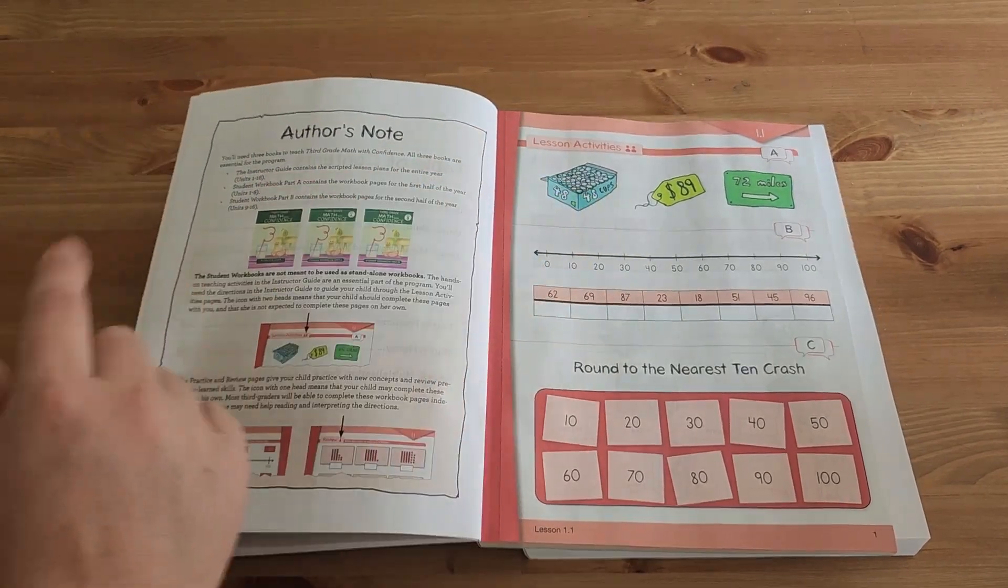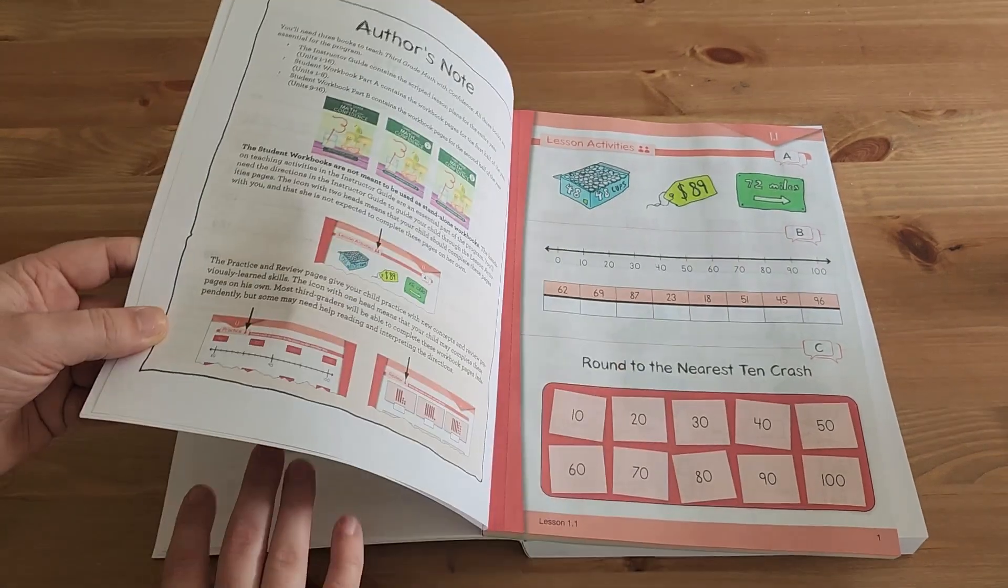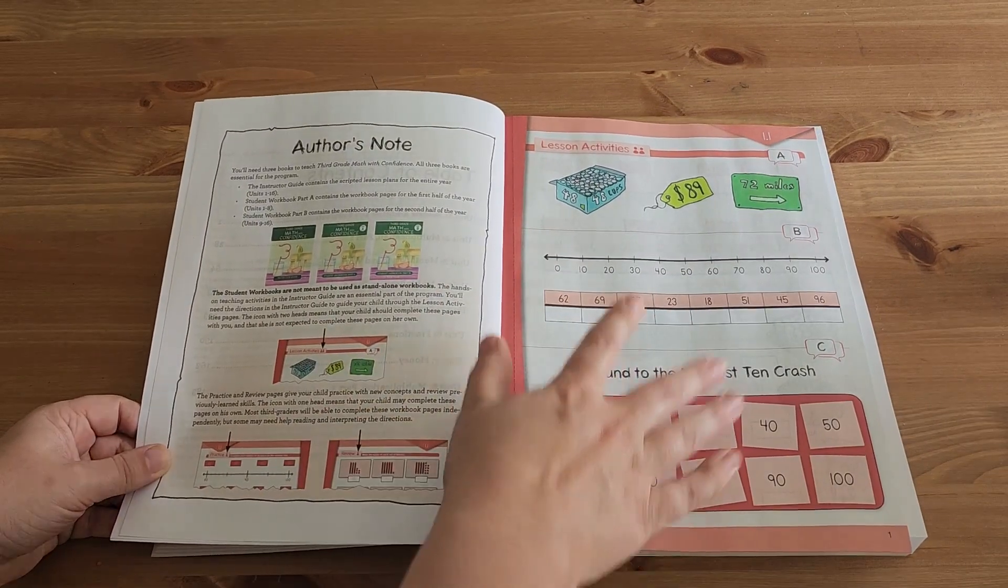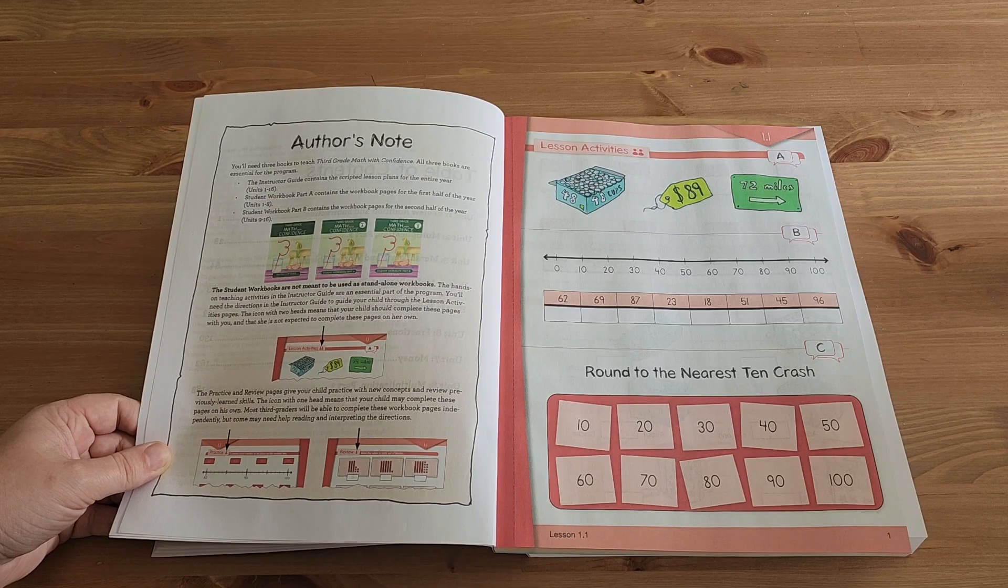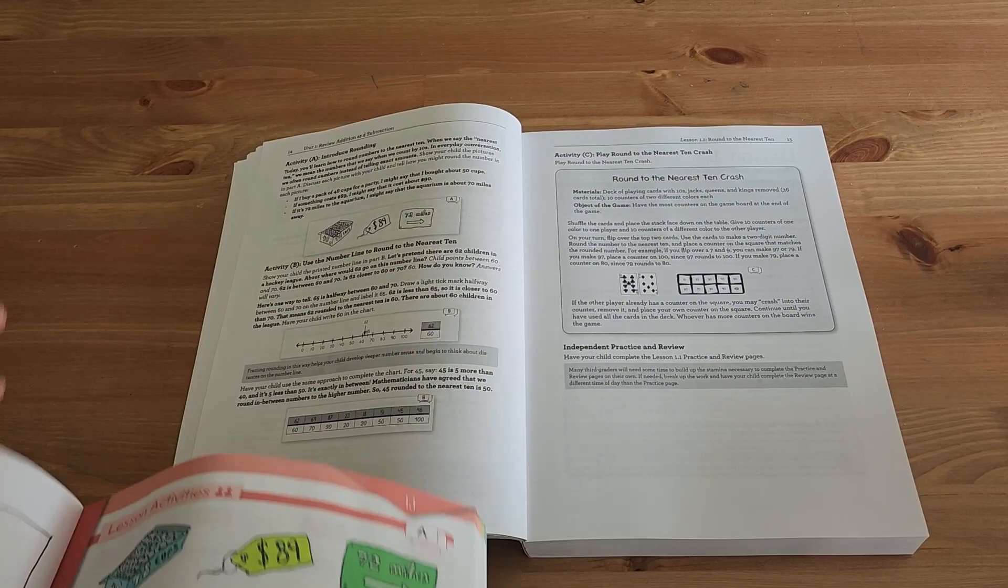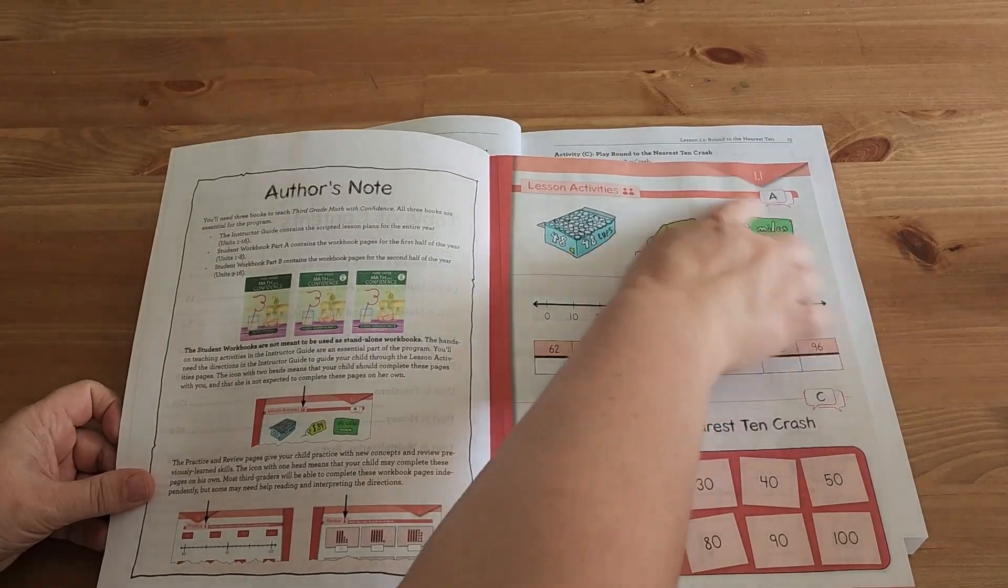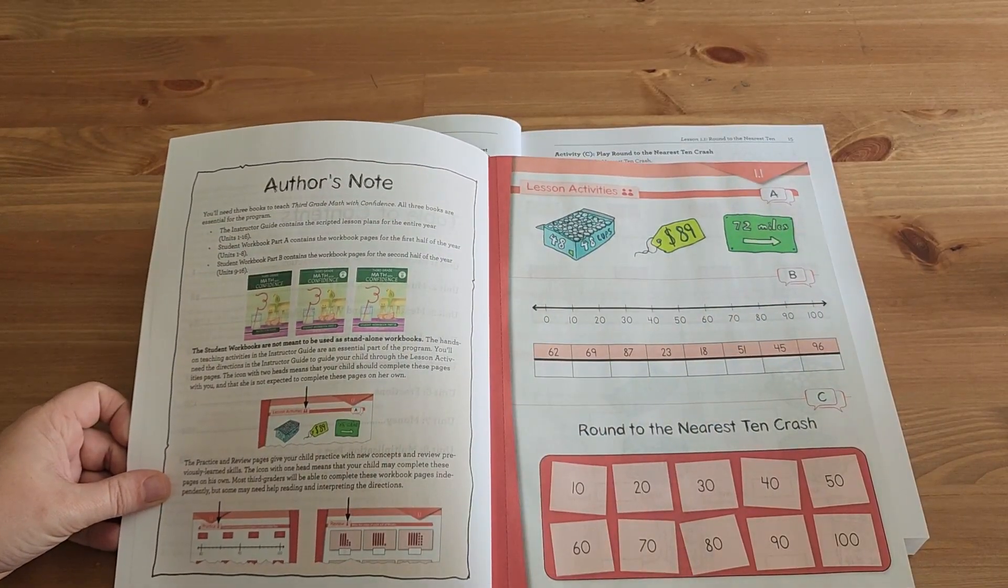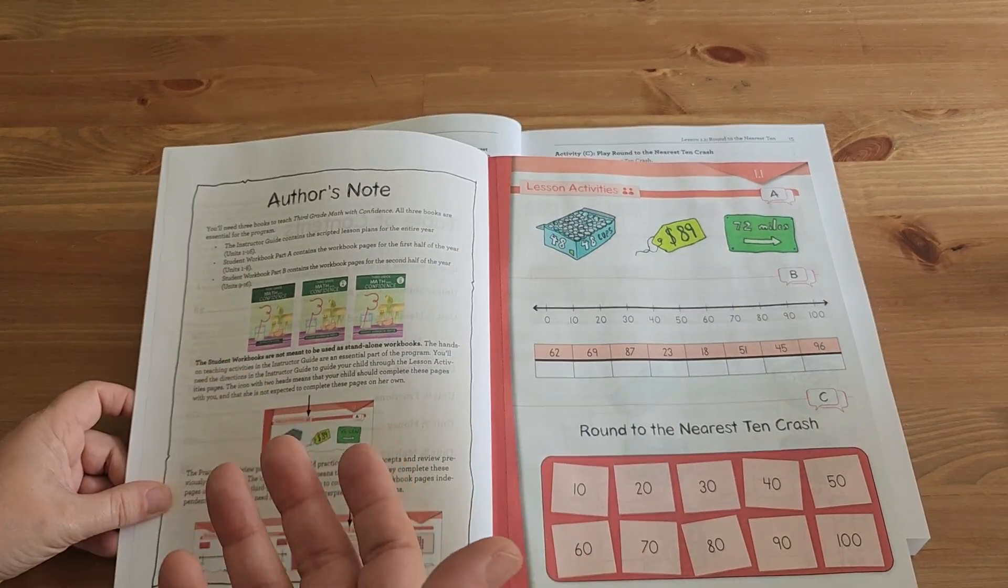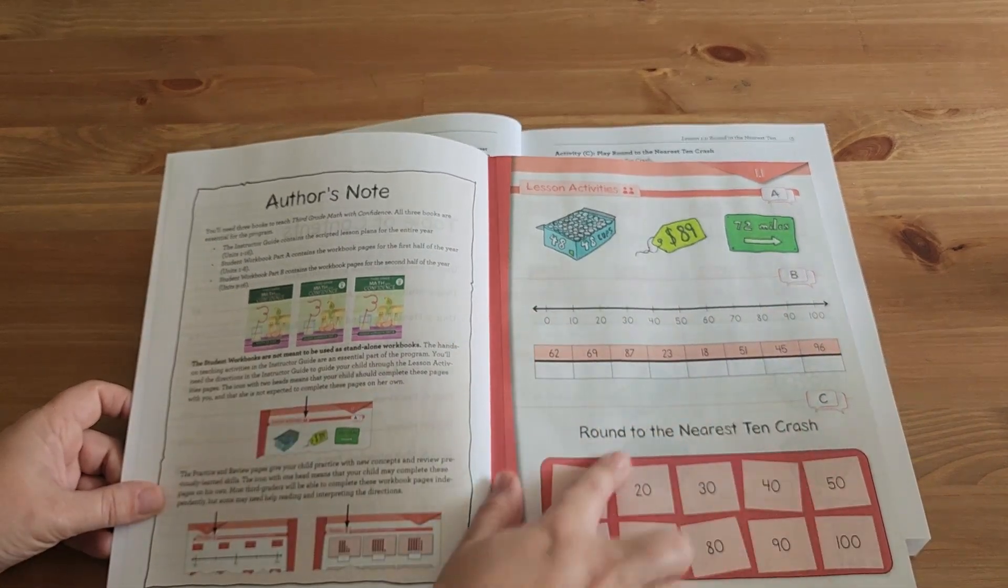So just to show you a little bit at the beginning, you can see the different units that are in workbook A, little author's note, and then we get right into unit 1.1. And so you can see this is definitely where all the color and amazingness comes into this curriculum. Now, here are the lesson activities. There are two people there. So this is where we are bringing the instructions from the instructor guide into here. There are no instructions on this page. It all comes from the instructor guide.